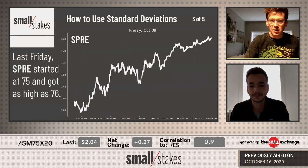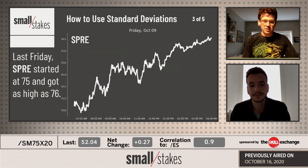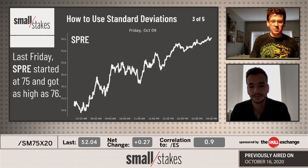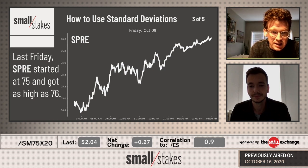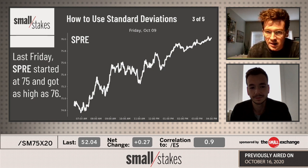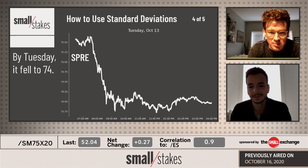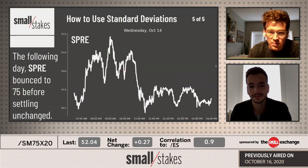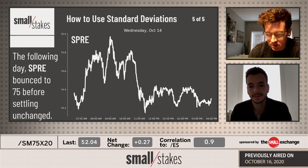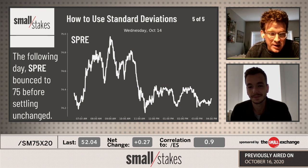What's more intriguing to me and us active traders is this intraday movement. Last Friday, to walk you through SPRE as a primary example — SPRE starts at 75 and then gets as high as 76 last Friday. Then on that Tuesday, you see a sell-off from 76 all the way down below $74. And even intraday you see this bounce off of 73.75 back up to 74.25. The following day, Wednesday, you see another move back to $75. This is the type of thing we're looking at when we talk about a ton of opportunity in a market that hasn't gone anywhere.